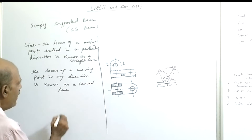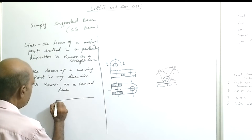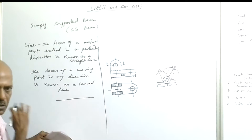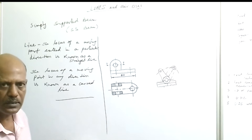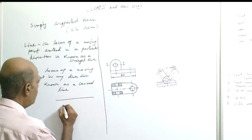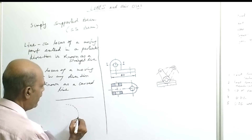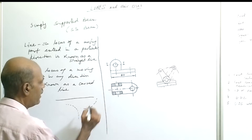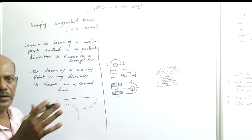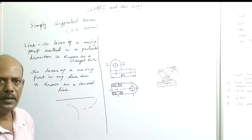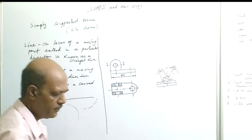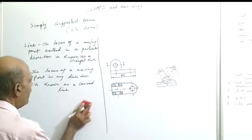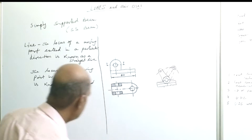So a moving point moving along one direction gives a straight line when all the points are joined. If the point moves in any direction — this direction or that direction — joining all those points gives a curved line.